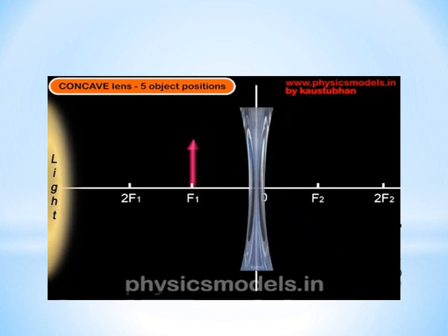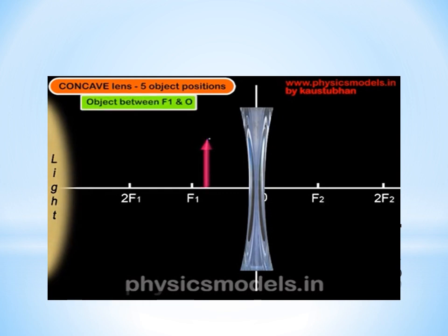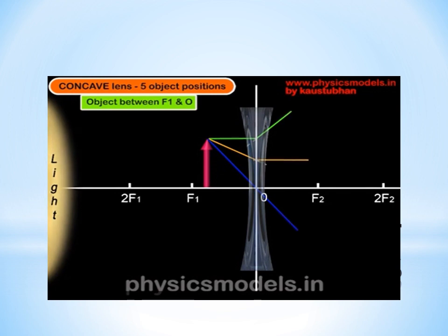We have covered many positions of the object. The last position can only be between F1 and O, so the object is slid very close to the lens. We draw our three favorite rays - the green ray, the orange ray, and the blue ray. The green ray diverges upwards, the orange ray aimed at F2 travels parallel to the principal axis, and the blue ray goes through O without refraction. When we draw the dotted lines and find the intersection, we get an image which is virtual, erect, diminished, and its position is between O and the object. I hope this was useful to you.